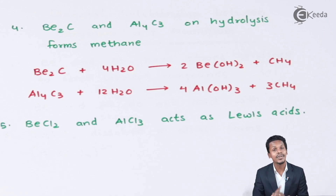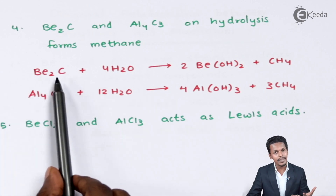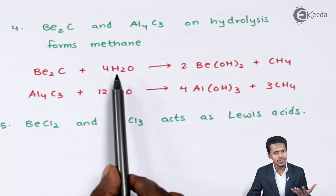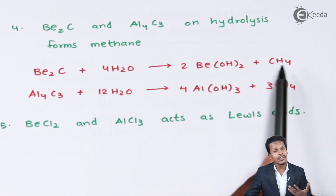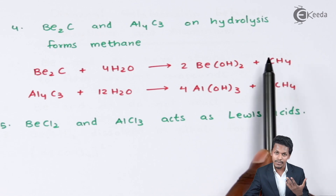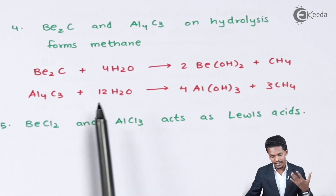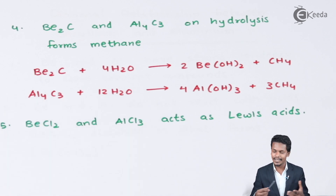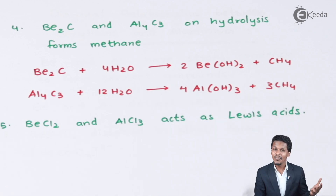Looking at the reactions: when beryllium carbide reacts with 4 moles of H₂O (hydrolysis), it forms beryllium hydroxide along with methane gas. Similarly, when aluminium carbide undergoes hydrolysis with water, it forms aluminium hydroxide along with liberation of CH₄. This confirms the similarity between beryllium and aluminium.